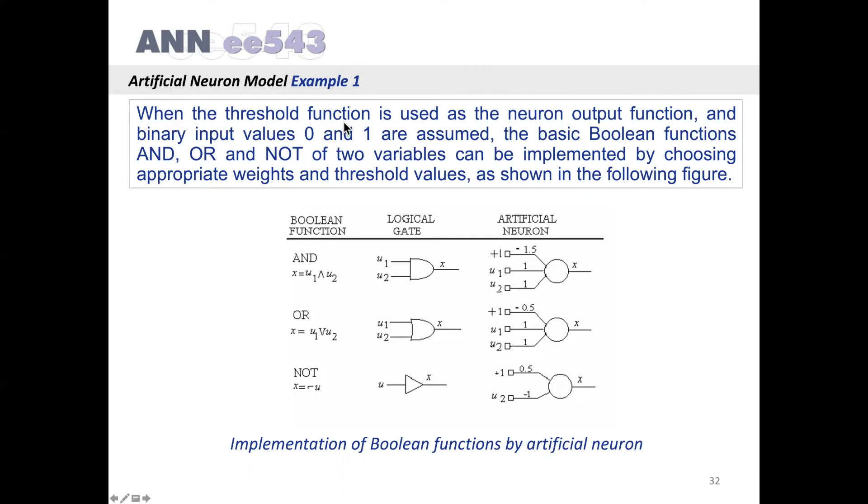Here, there is an example. When the threshold function is used as the neuron output function, and binary input values 0 and 1 are assumed, the basic boolean functions AND, OR, and NOT of two variables can be implemented by choosing appropriate weights and threshold values, as shown in the following figure. Consider the boolean functions AND, OR, and NOT. These are the corresponding logical gates, and these are the implementation of the boolean functions by artificial neuron.